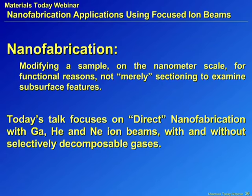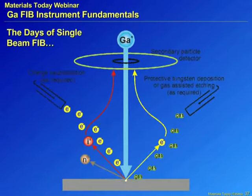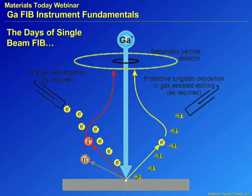I'm going to focus on this approach where nanofabrication is for a functional purpose — you're trying to create a structure that is going to do something for you. Specifically, I'll talk about direct nanofabrication with gallium, helium, and neon ion beams, with or without a decomposable gas. I'm not going to cover ion beam lithography today. Going back to the days of single-beam FIB: we're talking about a scenario where a primary ion beam — gallium in this case — comes down and interacts with your sample, creating sputtered neutral particles or ions.